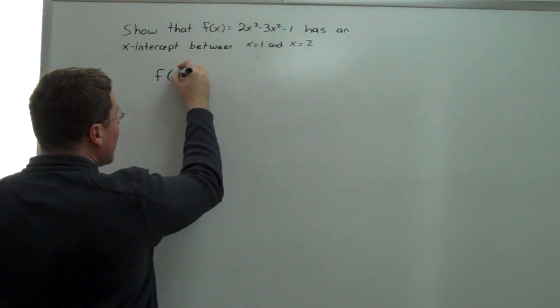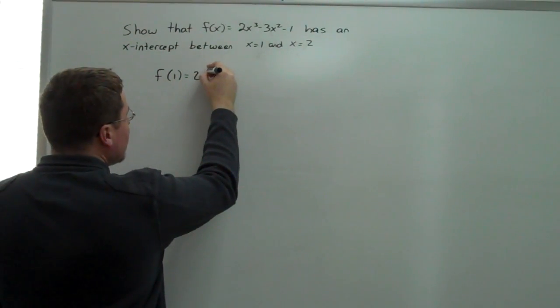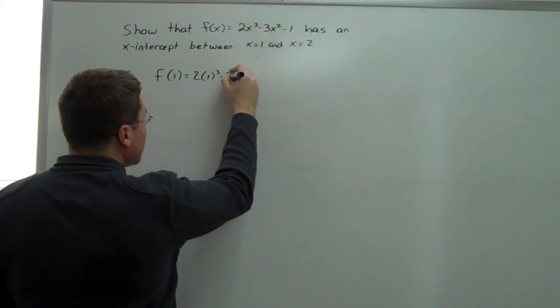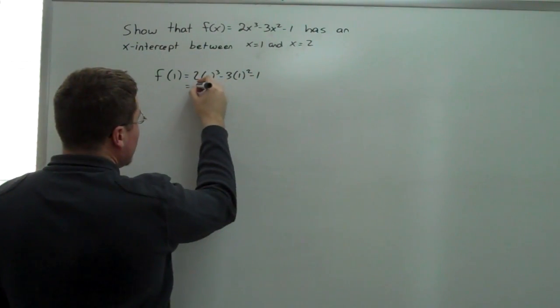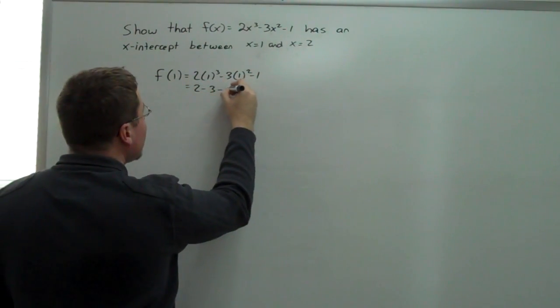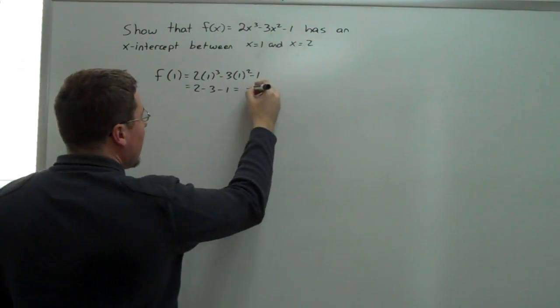So, first we compute what f of 1 is. So that equals 2 times 1 to the third minus 3 times 1 squared minus 1, which is equal to 2 minus 3 minus 1, which is equal to negative 2.